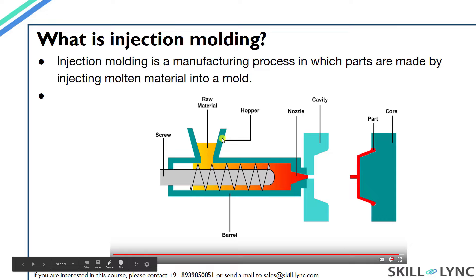The raw material used for injection molding plastic parts is plastic pellets, which are called resins. This resin is dropped into a hopper, and through the hopper it goes into the injection barrel. In the injection barrel, the plastic pellets are driven forward by the rotation of a screw. As the plastic moves forward, it melts due to friction and gets converted to molten plastic. External heating may also be provided in some cases. Then this molten plastic is injected into the mold through the nozzle.